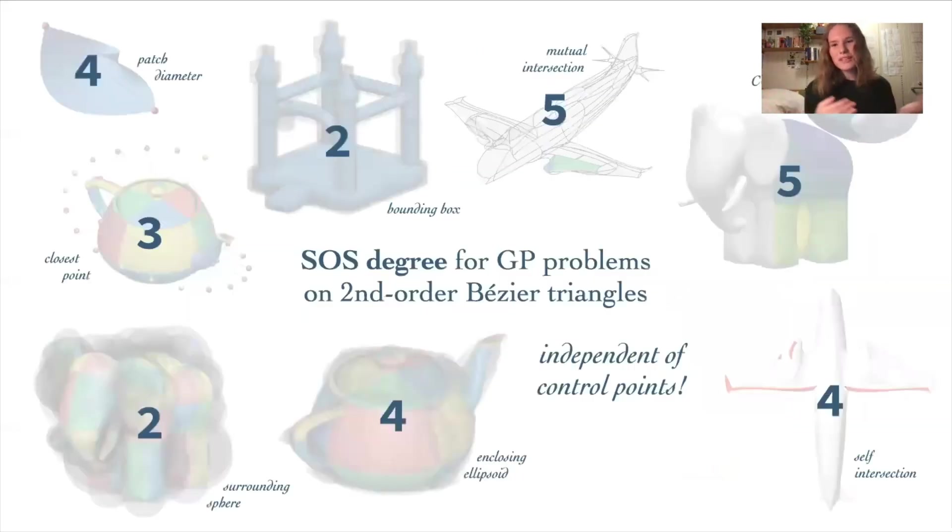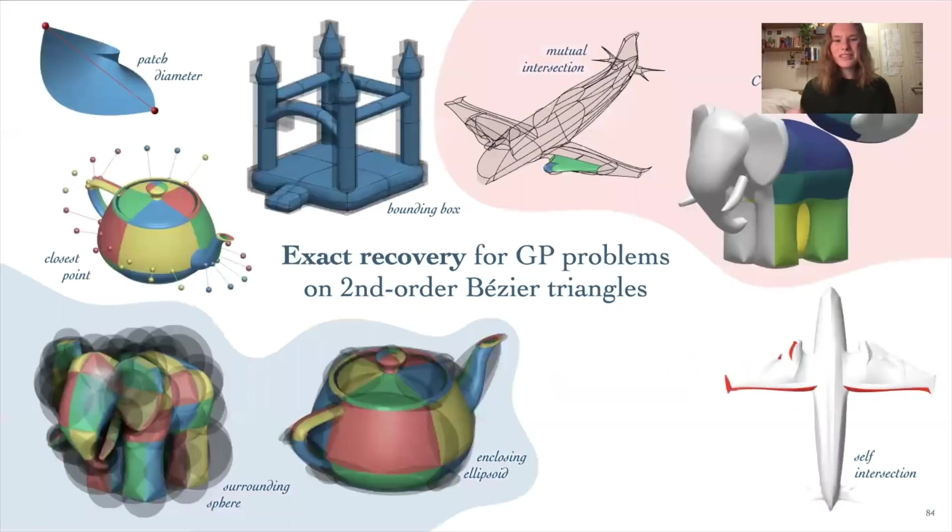Now let's return to these operations on second-order triangles. We recall that we found a set of degrees which always give us the correct answer for these problems. One question we ask is, do we actually achieve exact recovery? Well, it turns out we actually don't, and I'll explain now how and why that is.